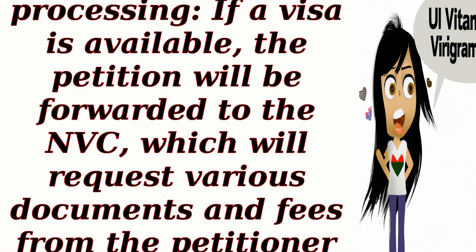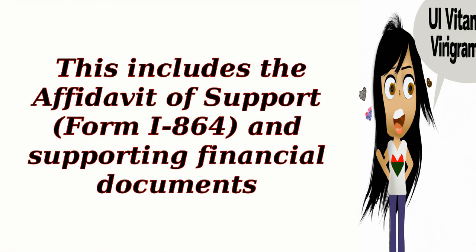National Visa Center (NVC) processing. If a visa is available, the petition will be forwarded to the NVC, which will request various documents and fees from the petitioner and the intending immigrant. This includes the Affidavit of Support, Form I-864, and supporting financial documents.